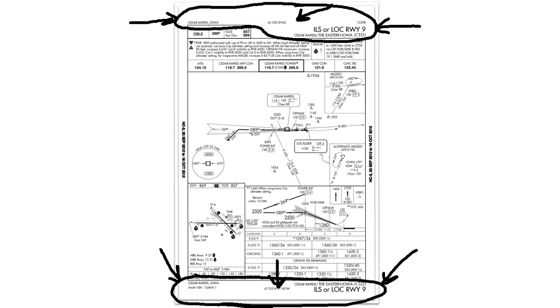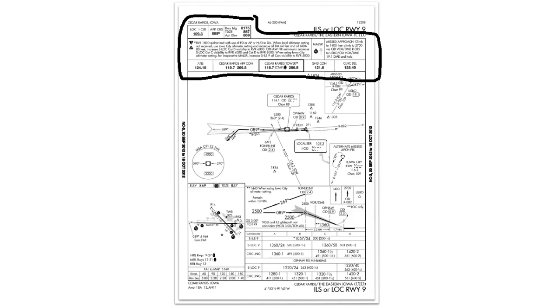The second major portion of the approach chart is the pilot briefing section. The pilot briefing section is located at the top of the chart and includes some very important information to review prior to flying the approach. The top section includes the approach frequency, approach course, runway length, and airport and touchdown zone elevations.